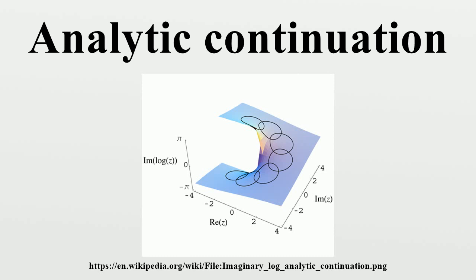Natural boundary: Suppose that a power series has radius of convergence R and defines an analytic function F inside that disk. Consider points on the circle of convergence. A point for which there is a neighborhood on which F has an analytic extension is regular, otherwise singular. The circle is a natural boundary if all its points are singular.